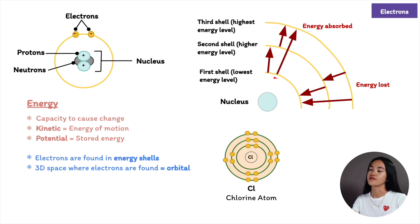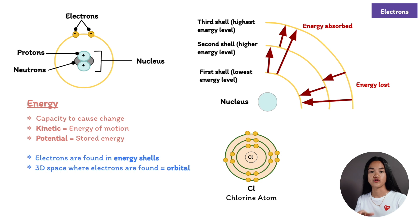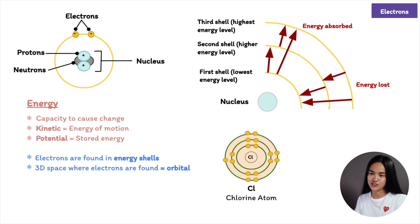Electrons in shells close to the nucleus have less energy than electrons in shells farther away. If an electron moves up a shell, it absorbs energy; if it moves down a shell, it loses energy. When two atoms come together, their nuclei don't come close enough, so electrons are the particles directly involved in chemical reactions. The behavior of an atom is determined by the distribution of electrons in its electron shells or orbitals.